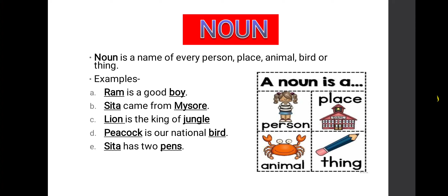Now let us see the definition of the first part of speech, that is noun. Noun is a name of every person, place, animal, bird or thing. Once again I repeat the definition: noun is a name of every person, place, animal, bird or thing.